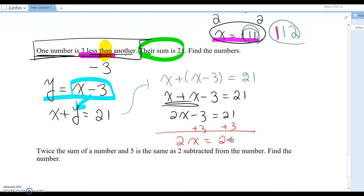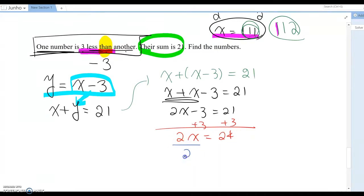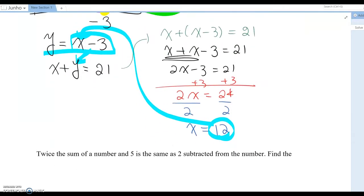Last step, you divide by two. Then x equals 12. Because this question asked you to find two numbers, now you replace this one into here. Then we can find the y value. So y equals 12 minus three, which is 9. So the answer is 9 and 12. That will be the answer for this problem.